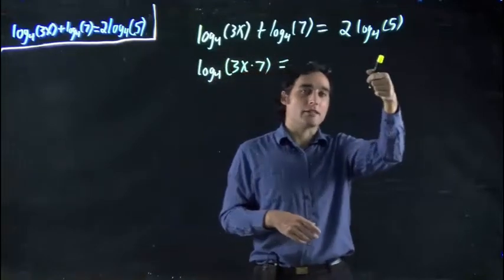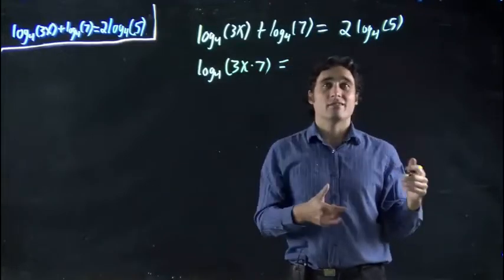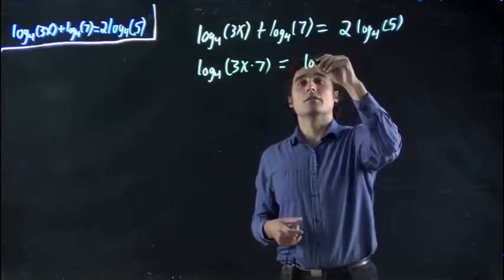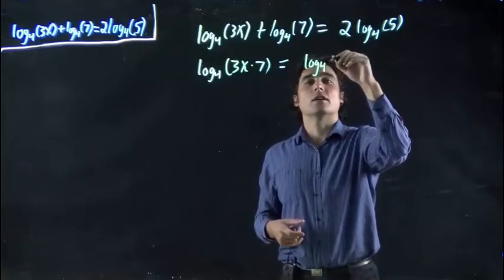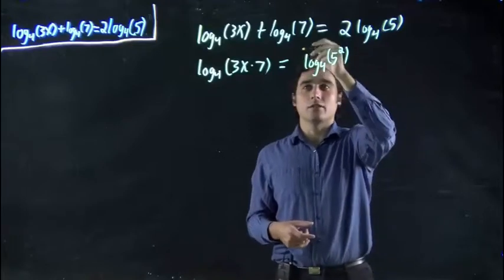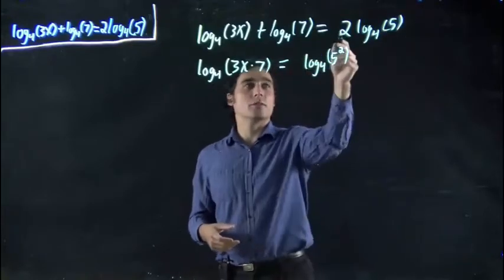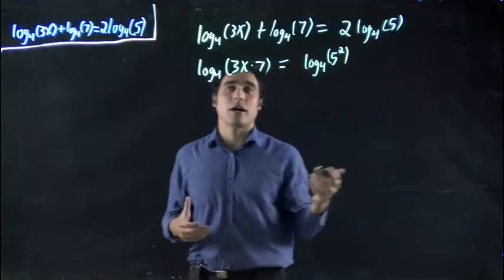We also have to clean up the right hand side, because we have 2 in front of our log. We don't want that. But using the power rule, we can rewrite this as log to the base 4 of 5 to the power of 2. Remember, you just take the coefficient in front and put it up as a power to the term. We took the 2 from here and put it as 5 to the power of 2.